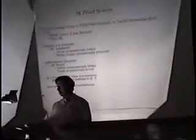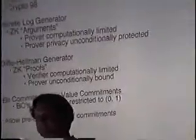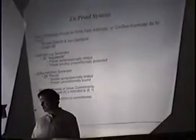I've implemented two of the generators they describe in their paper, one which is suitable for zero knowledge arguments where the prover's privacy is protected unconditionally, and the other for zero knowledge proofs where the prover is unconditionally bound. It depends on what model that you're using.